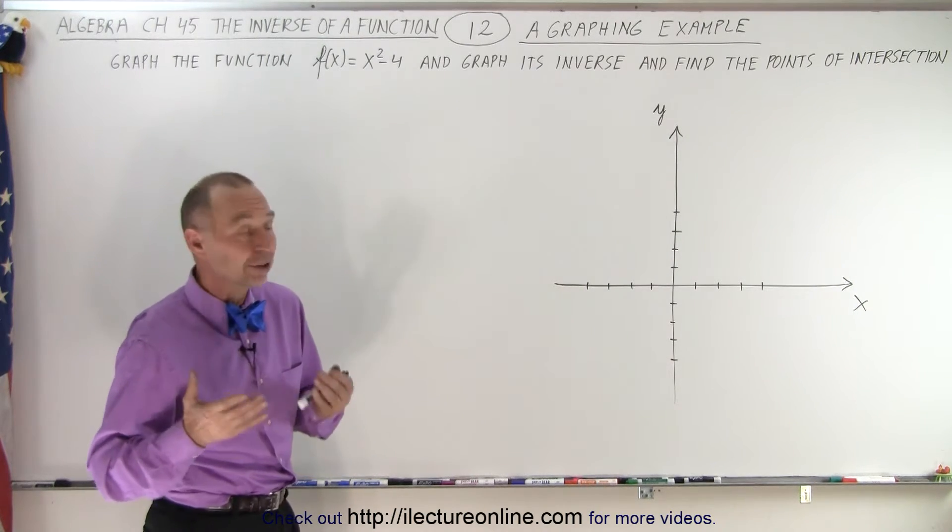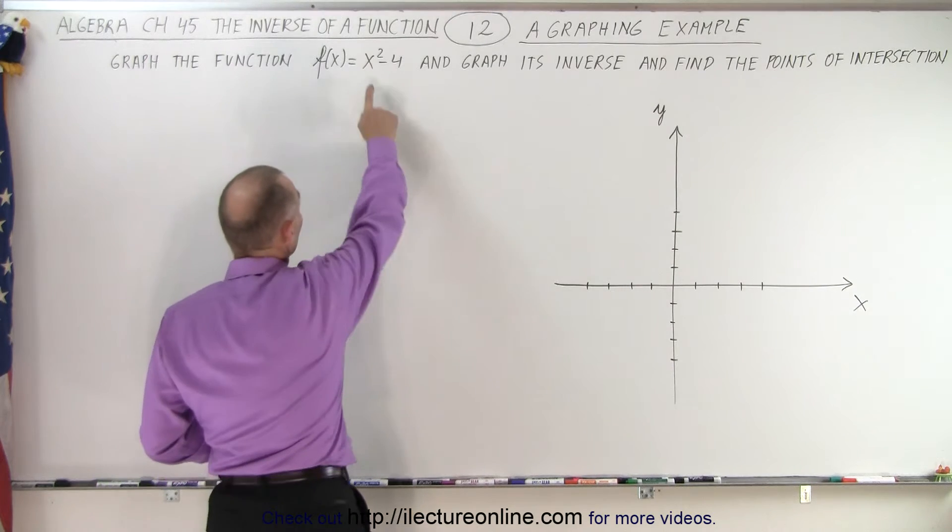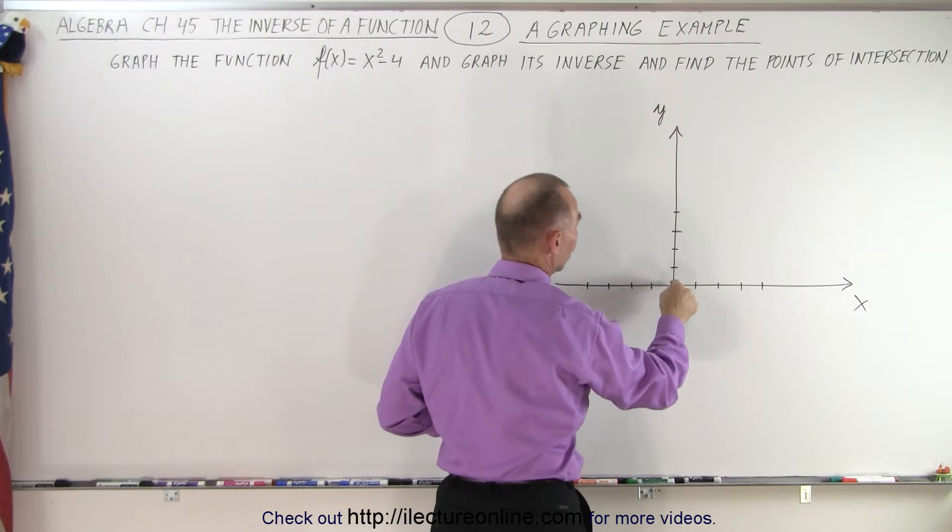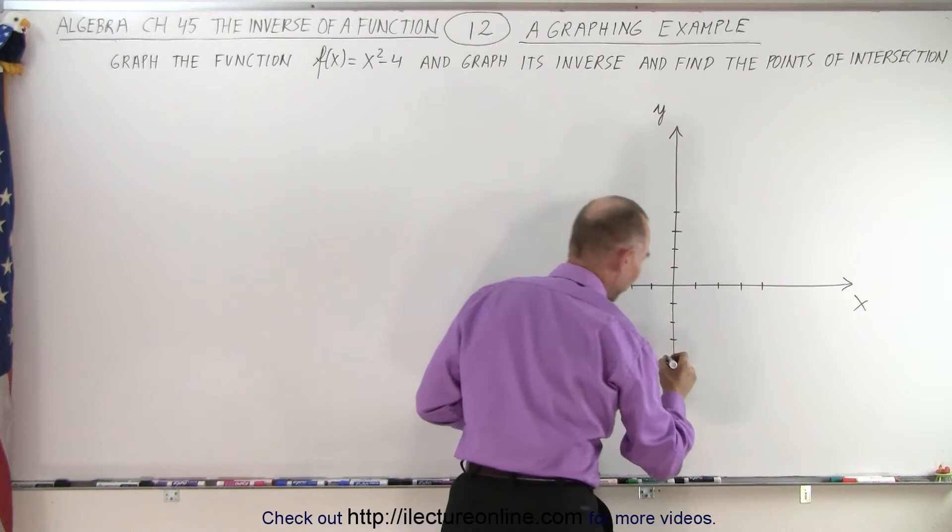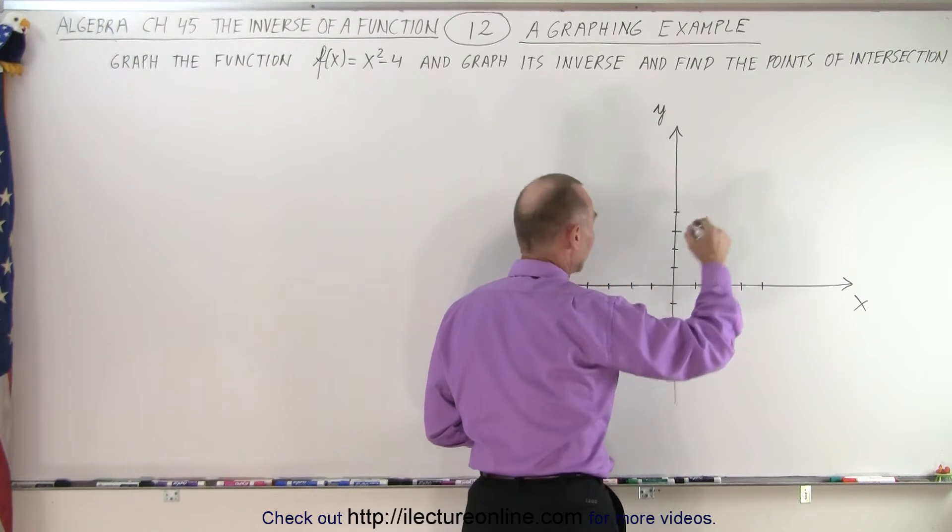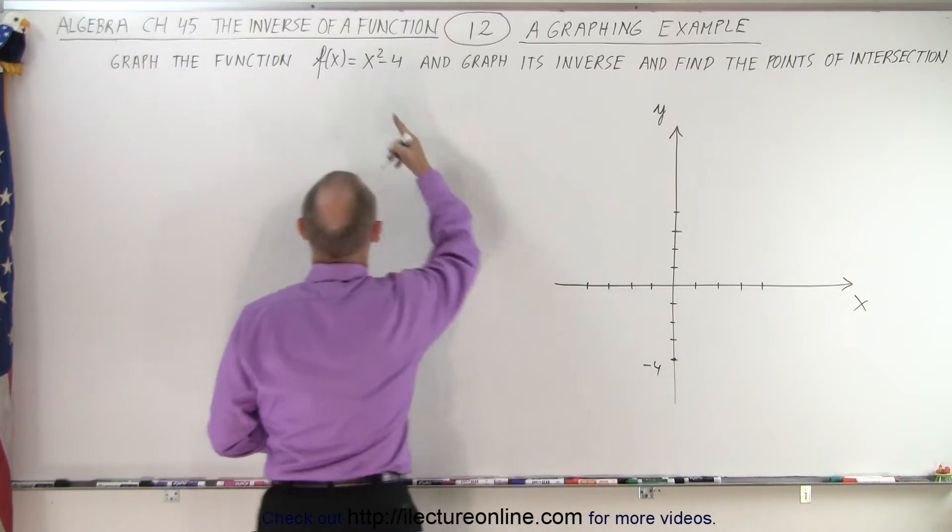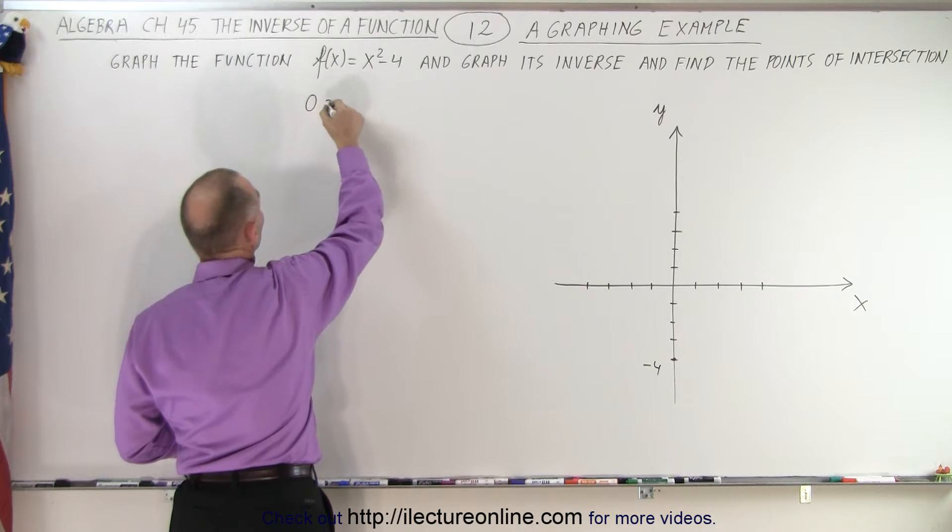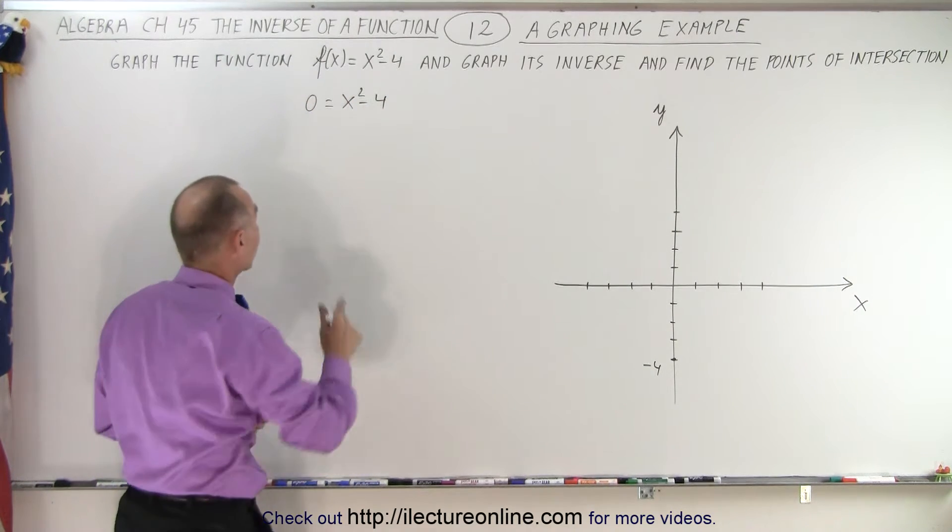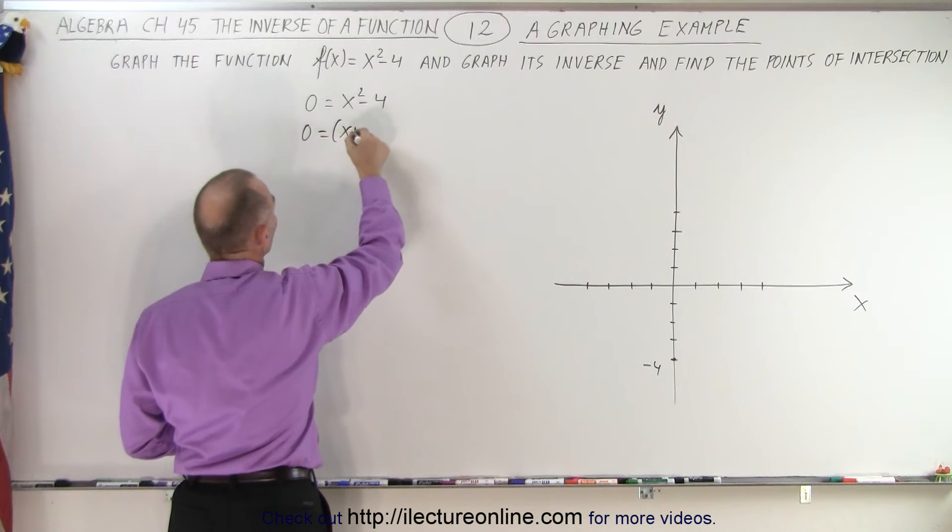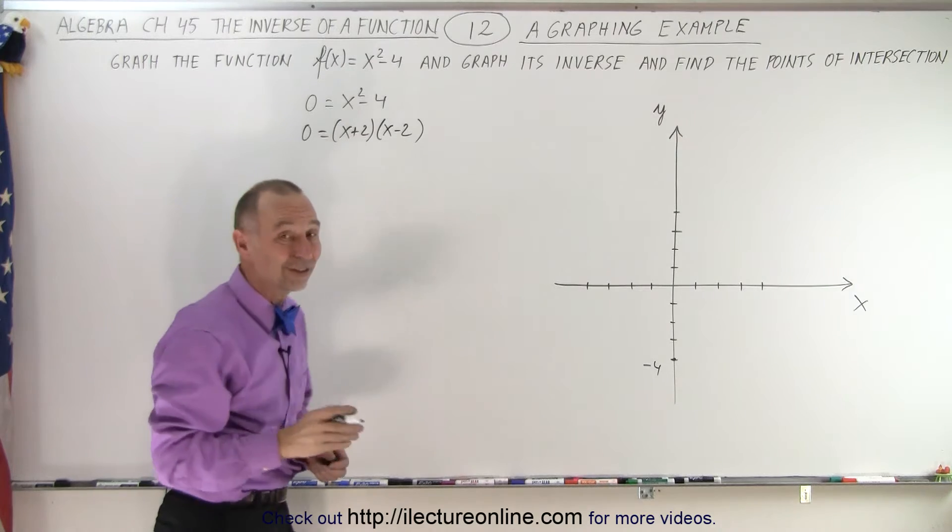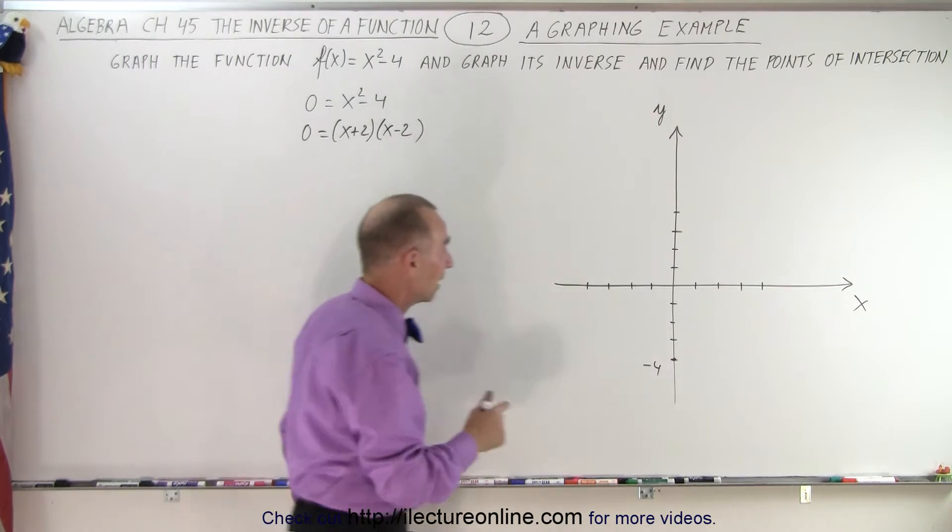So first of all, graphing the function isn't that difficult. f of x is equal to x squared, a simple parabola with the vertex at the origin, but with the minus 4, the vertex comes down to this point right here, minus 4. And so then we know if we set this equal to 0, 0 is equal to x squared minus 4. We'll find the two roots of the quadratic equation. So 0 equals x plus 2 times x minus 2, which means that it crosses the x-axis at plus 2 and minus 2.